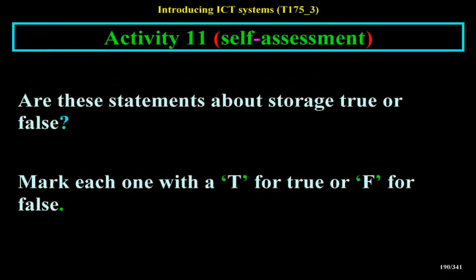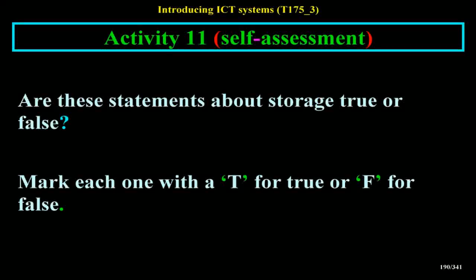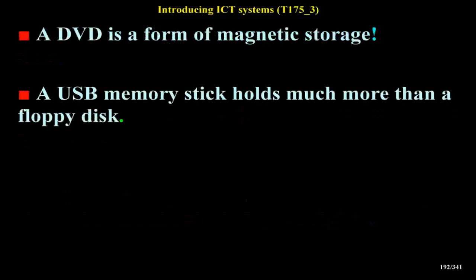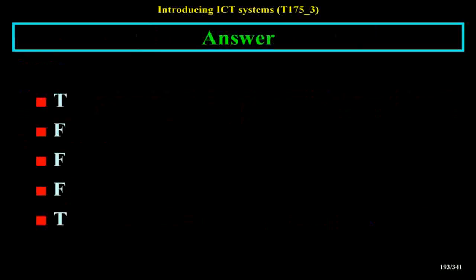Activity 11 Self-Assessment: Are these statements about storage true or false? The hard disk in a computer is used to store data — True. The storage capacity of a floppy disk is several gigabytes — False. Data files that you want to update regularly should be stored on a CD-ROM optical disk — False. A DVD is a form of magnetic storage — False. A USB memory stick holds much more than a floppy disk — True.